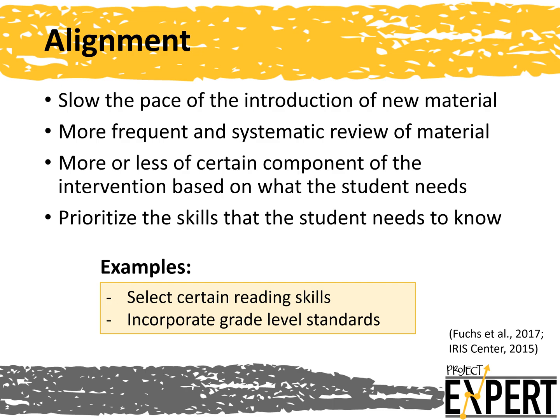When making adjustments to instruction and intervention, it is important that your intervention match the desired skills you wish to target. Making an alignment instructional adjustment may include slowing the pace of introduction of new material, more frequent and systematic review of material, more or less of a certain component of the intervention based on what the student needs, or prioritizing the skills that the student needs to know. Some examples of aligning your instruction to student needs include selecting certain reading skills to focus on and incorporating grade-level standards.